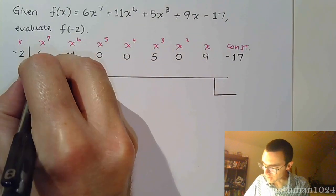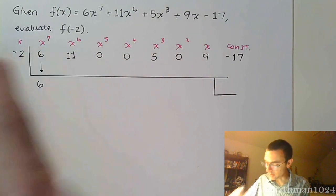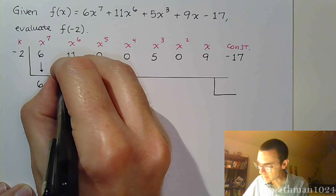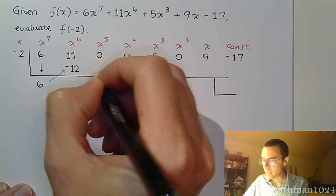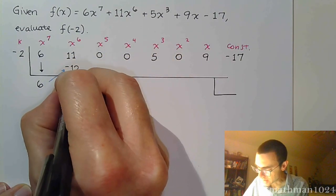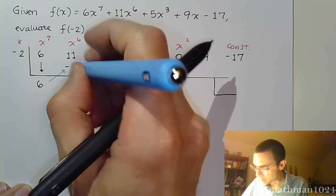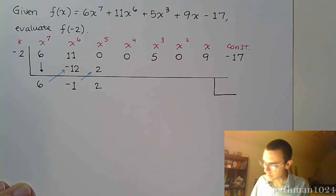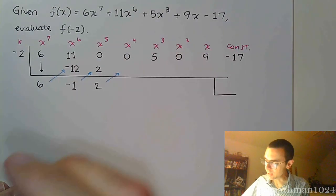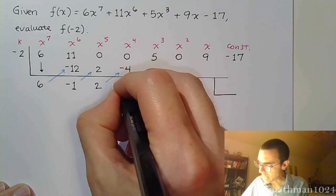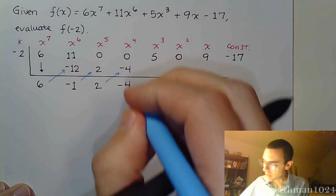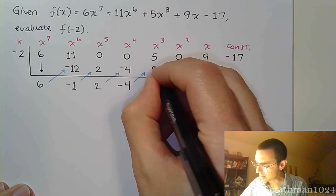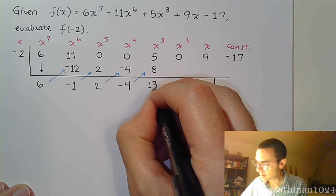Bring down the 6. That's all about multiply and add. Multiply, we get negative 12. Add, we get negative 1. Multiply times k, we get positive 2. Add, we get 2. Multiply times k, that gives me negative 4. Add, we get negative 4 again. Multiply times k, negative 2, we get positive 8. These guys add and give me 13.